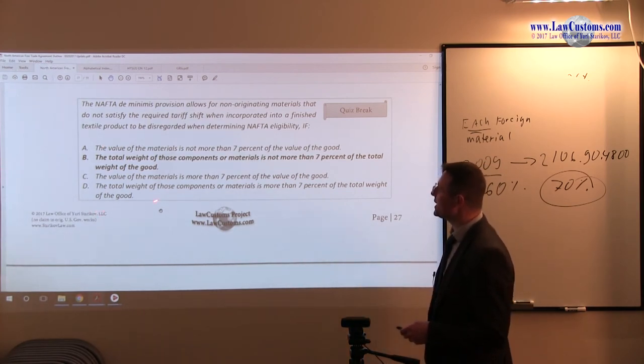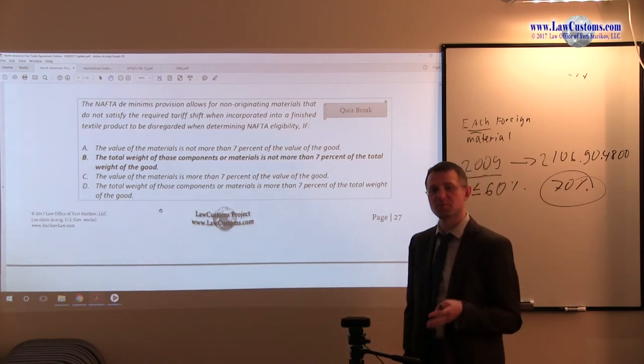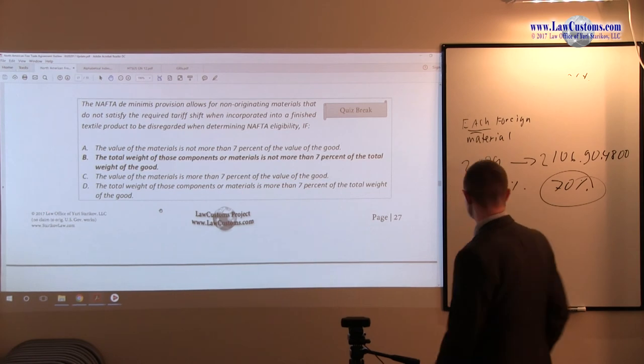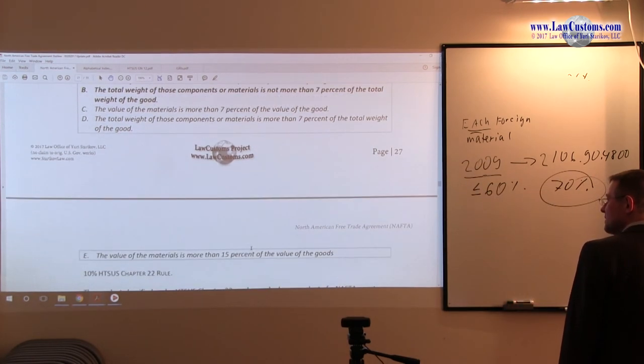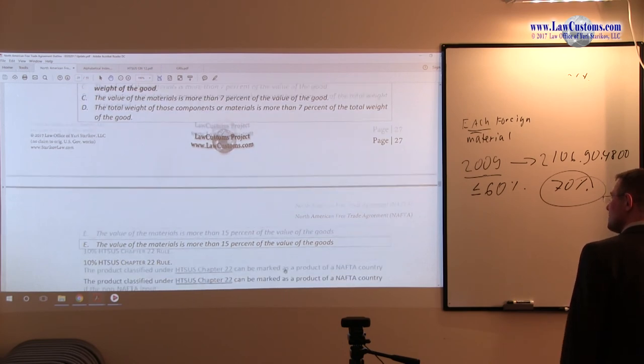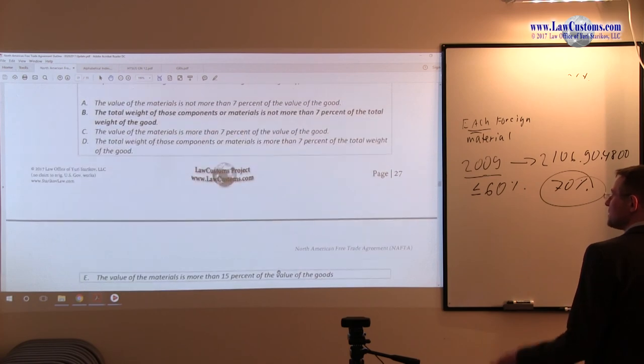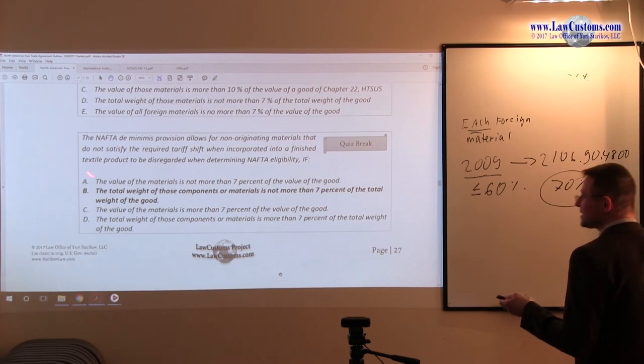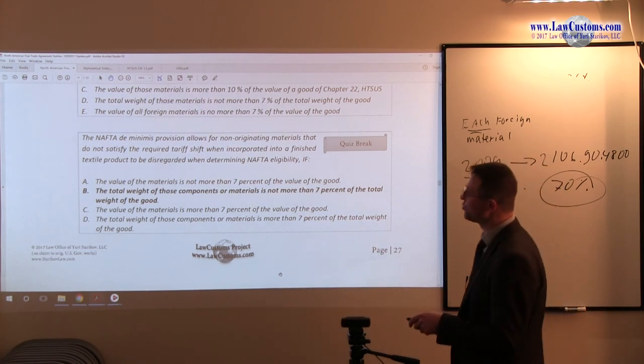D. The total weight of those components or materials is more than 7%. No, it has to be 7% or less, D is not correct. E. The value of materials is more than 50% of the value of the goods. Well that's totally out of line so E is not correct. So because you have textile provision, the textile provision fits smoothly into B.